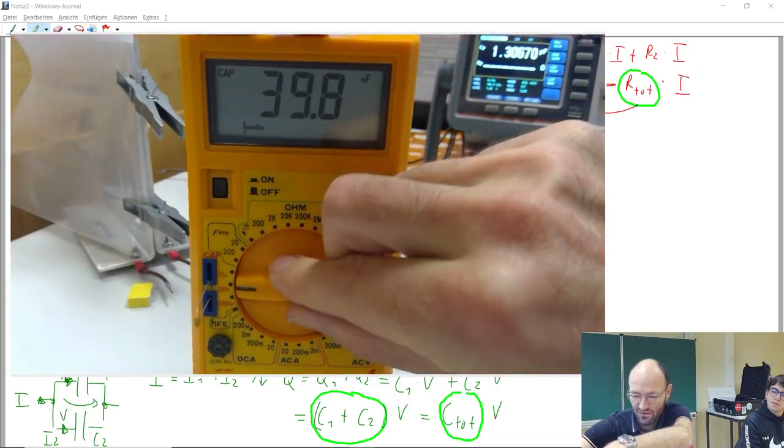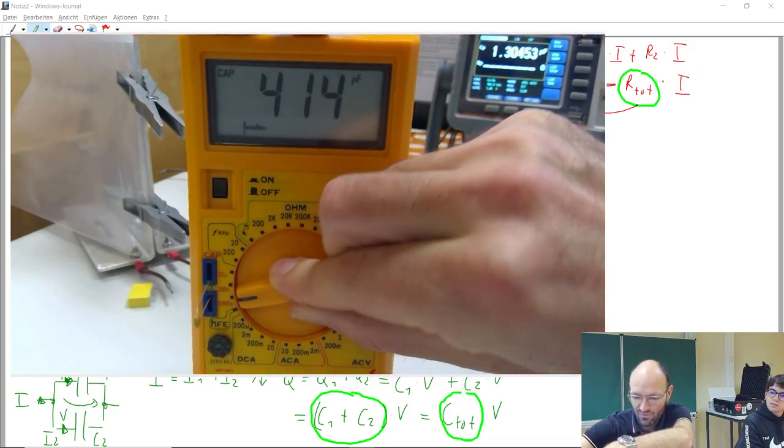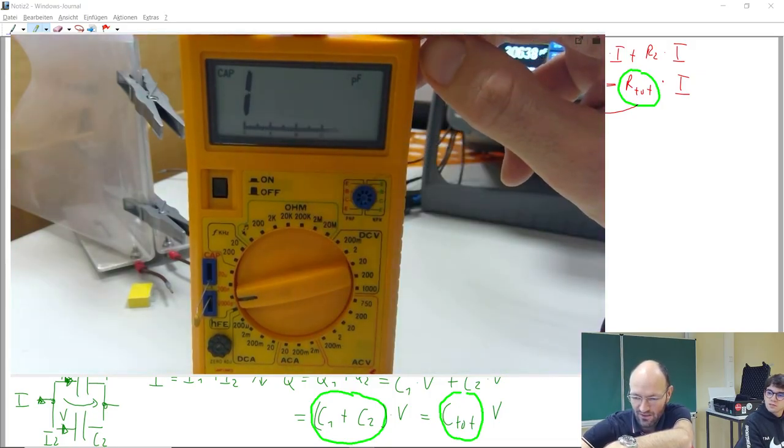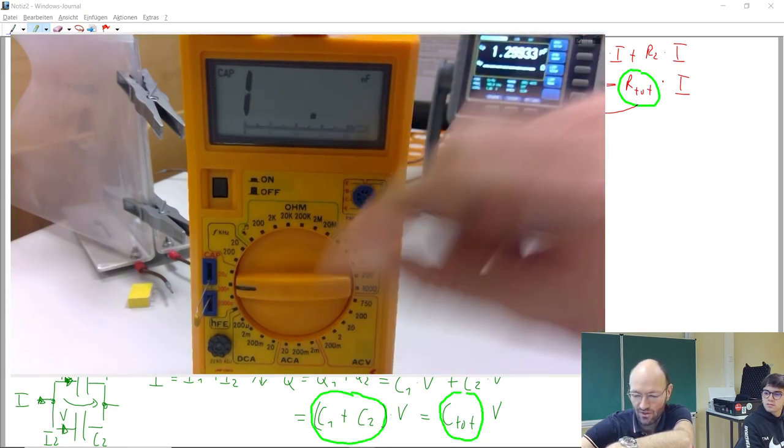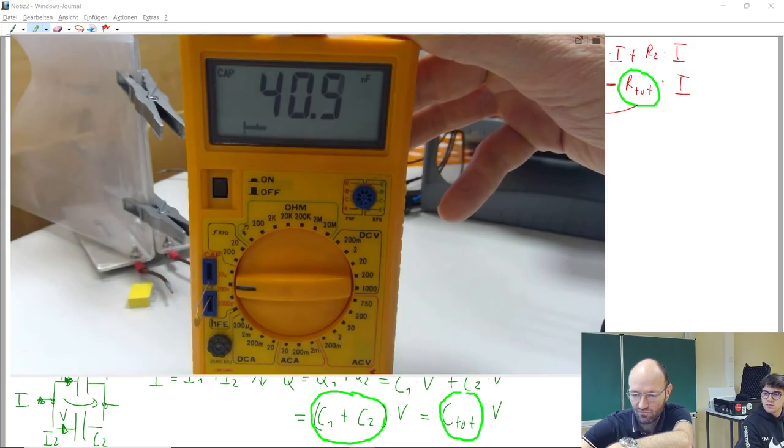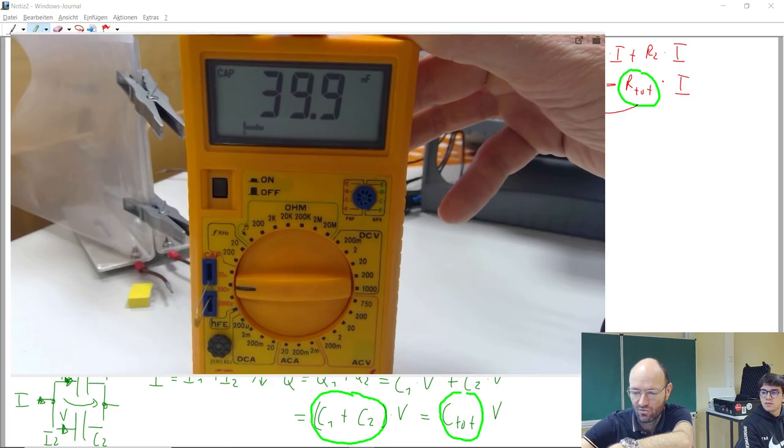We get 39.8 nanofarad. Not 47. And so if we go into this picofarad range, then we have overload, it's too much. So in this range, this looks meaningful. We get something like around 40, 39.9, something like this.